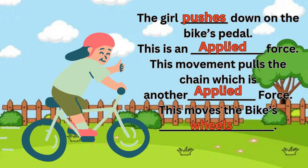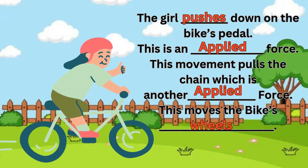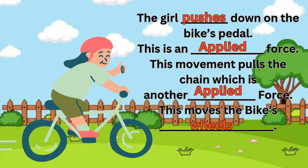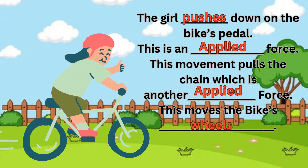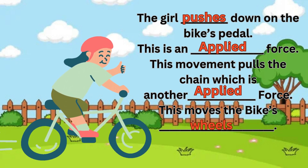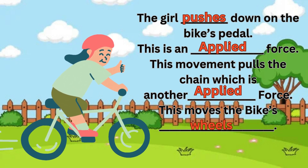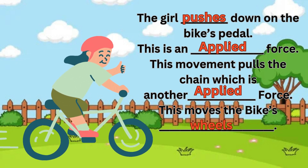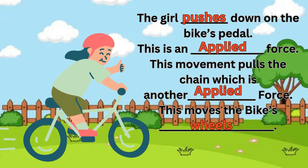Yes, you are right. The girl pushes down on the bike's pedal. This is an applied force. This movement pulls the chain, which is another applied force. This moves the bike's wheels.